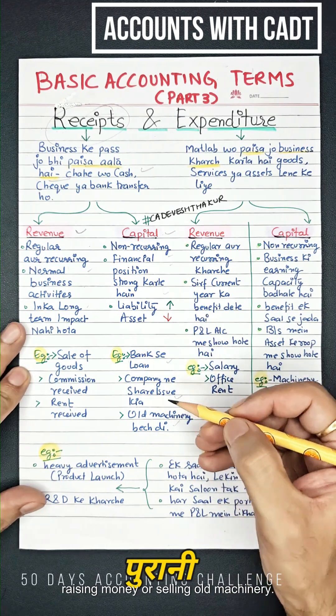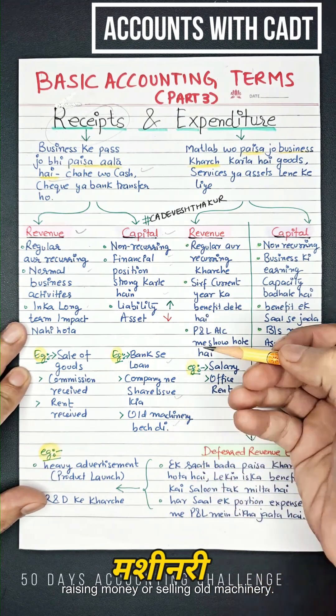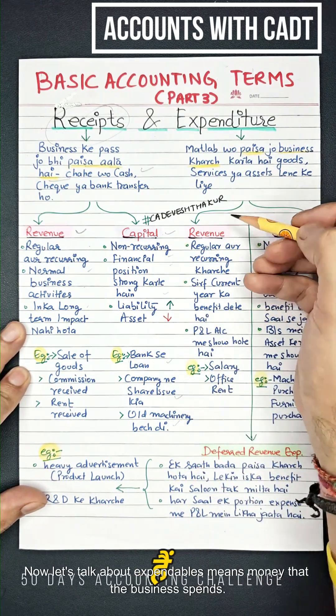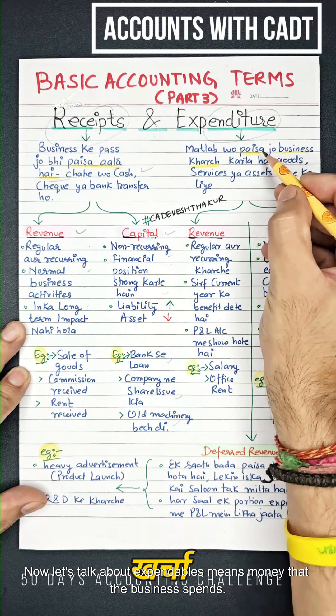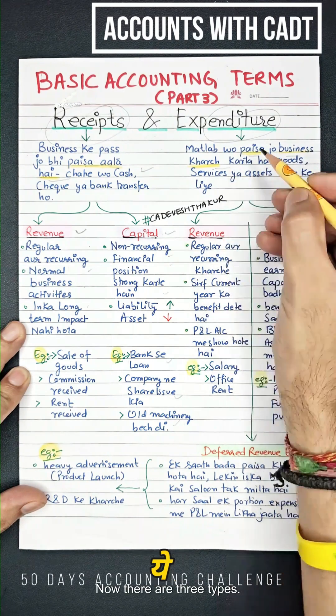Now let's talk about expenditure — the money that the business spends. There are three types of expenditure.